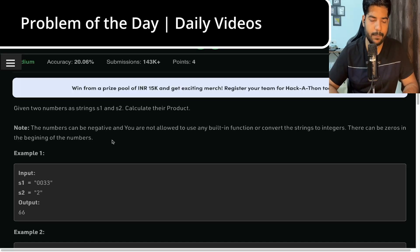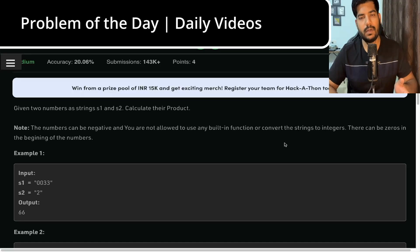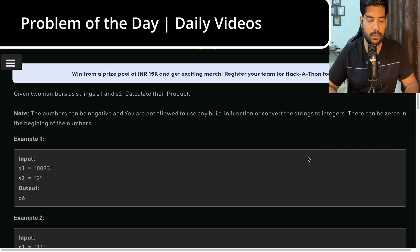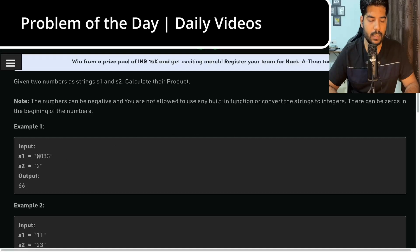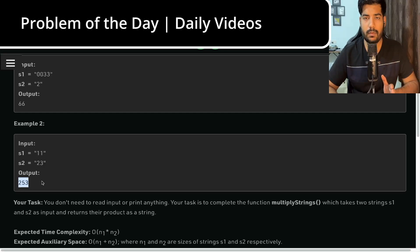The two strings can be large, and the note says the numbers can be negative. We are not allowed to use any built-in function to convert the string to integers — for example, C++ has a stoi function which converts strings to integers, so we can't use that. There can also be leading zeros. For example, a string with leading zeros containing 33 multiplied by 2 gives 66, and 11 multiplied by 23 gives 253.